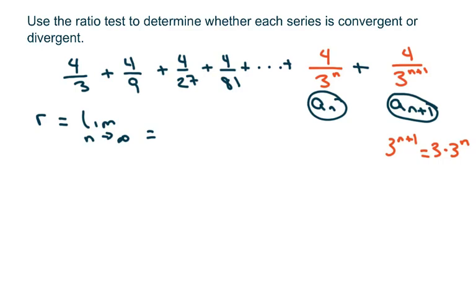So it's going to be our next term. I'm going to go ahead and write this as 4 over 3 times 3 to the nth over my nth term, which is 4 over 3 to the n.